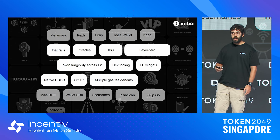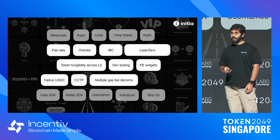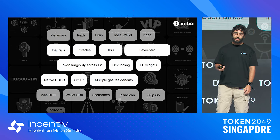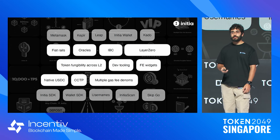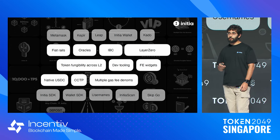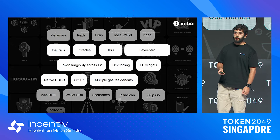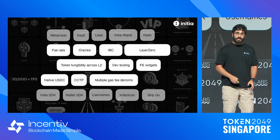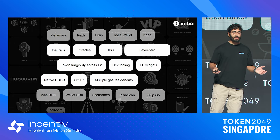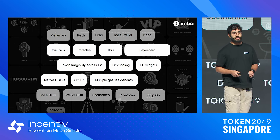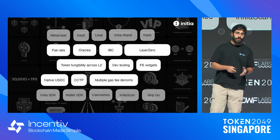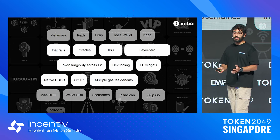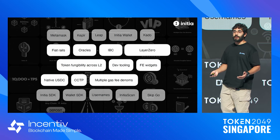Right when you launch an app chain on Minitia in any of the VMs, you have access to oracles, Layer Zero, IBC, fiat on-ramps, every wallet — whether EVM wallets, Cosmos wallets, or in-app wallets — native USDC and CCTP. Basically, that's everything you need. As an app chain developer, you don't have to business-develop yourself into talking to all these third-party service providers. Instead, we built it all and enshrined it into the app chain system at Initia.